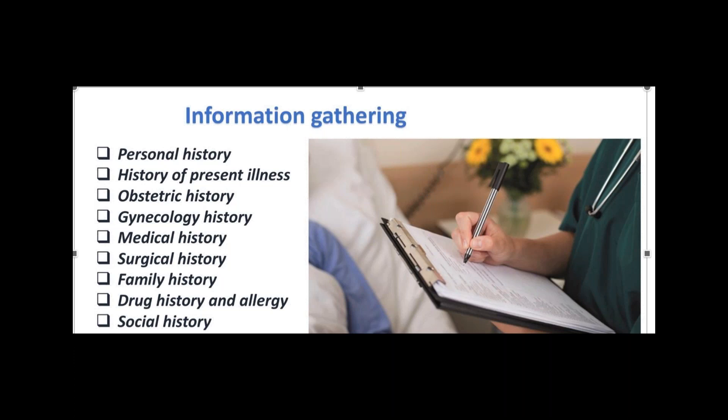So, how to ask about the history of present illness in any urogyne case? We have three compartments. If you remember the perineal area, we have the urethral compartment, the vaginal compartment, and the rectal compartment. We will start asking about the urinary compartment.